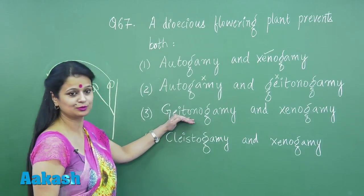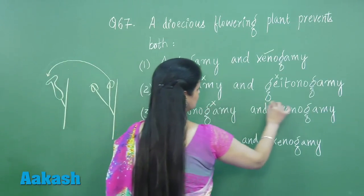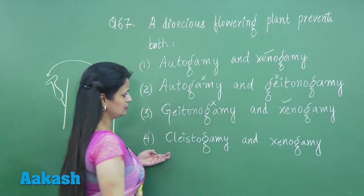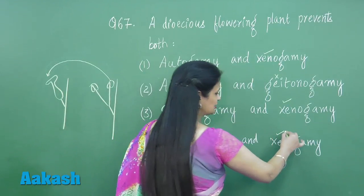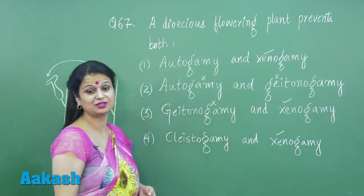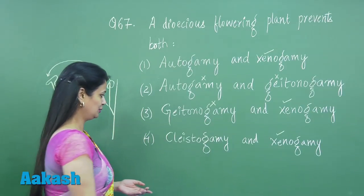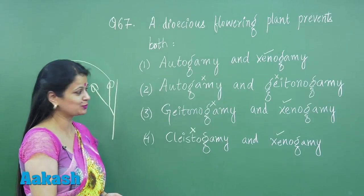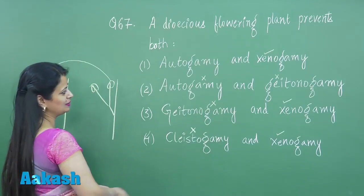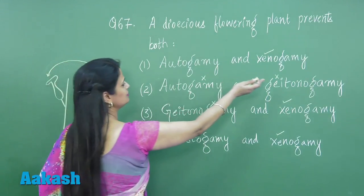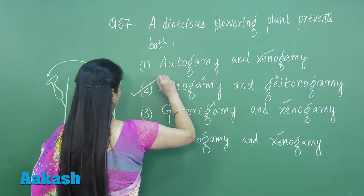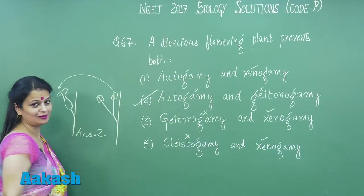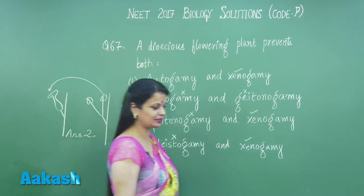Geitonogamy does not happen, but xenogamy does. Coming to the last option, cleistogamy is pollination within a closed flower — that also does not happen here. In the dioecious plant, autogamy will not occur and geitonogamy will not occur, so the right answer for this question is option number 2. Now let's move on to question number 68.